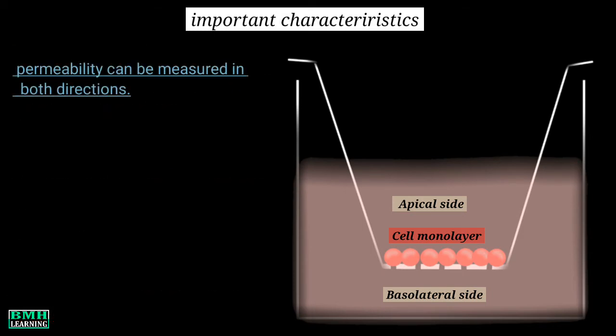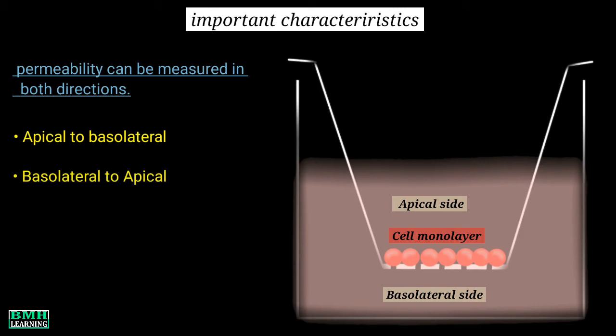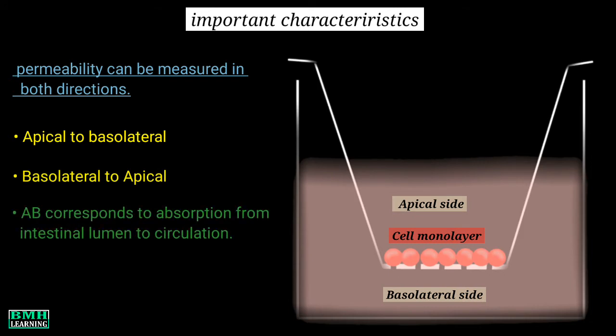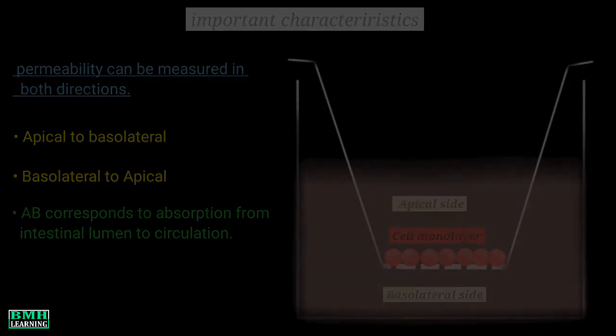The permeability of compounds can be measured in both directions: apical to basolateral and basolateral to apical. Apical to basolateral (AB) corresponds to absorption from the intestinal lumen to the circulation.